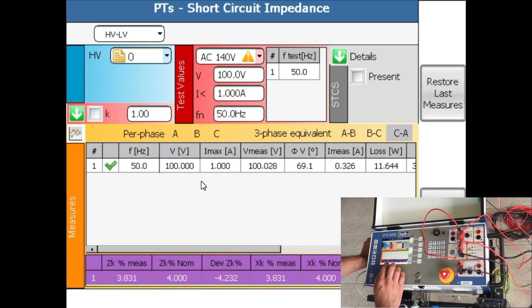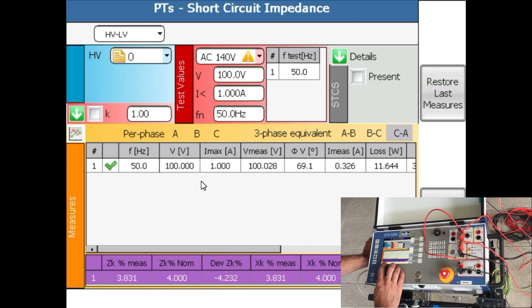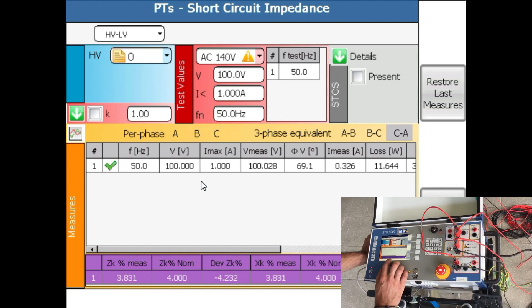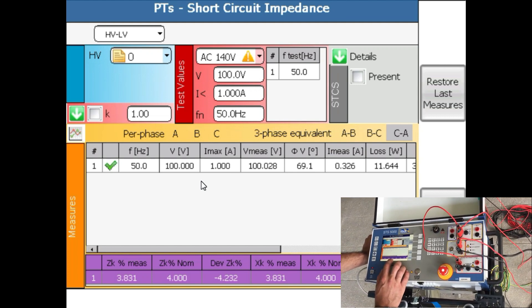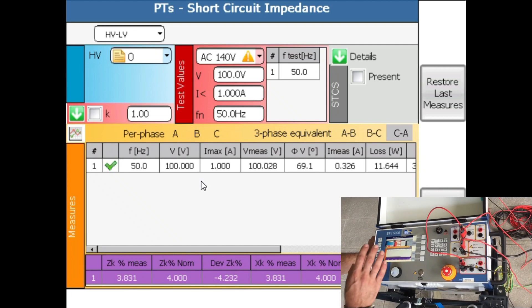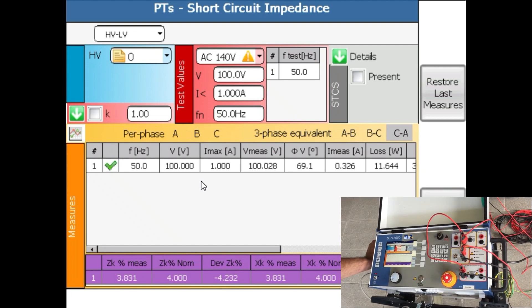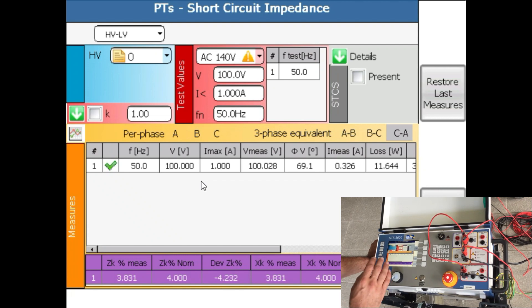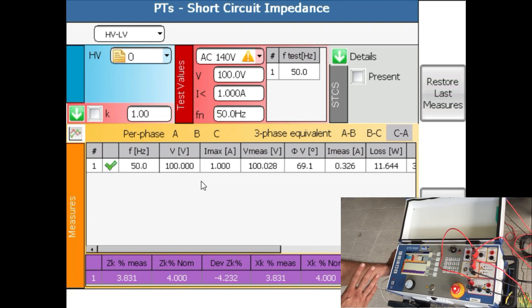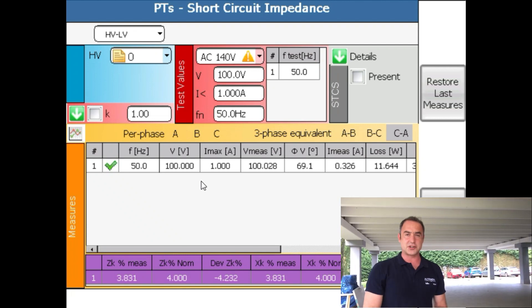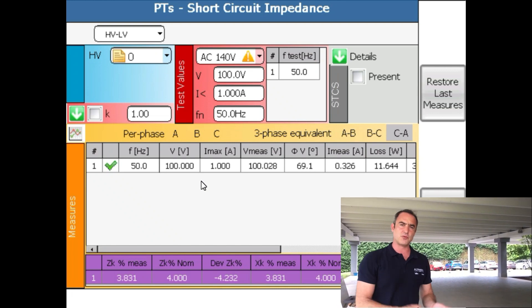The nominal value is 4%. We got 3.83. There is a deviation of 4.23%. For me in this case for this transformer this is a good result. What is a good or bad result definitely depends from a standard in a certain country for a big and for a small transformer.